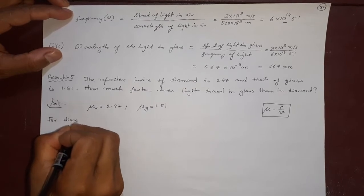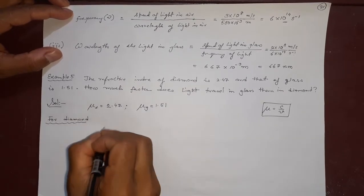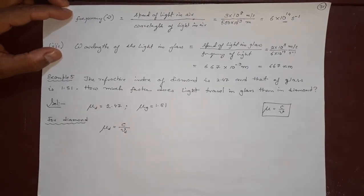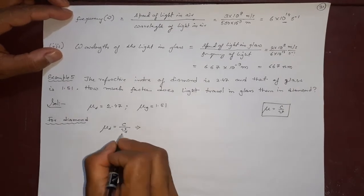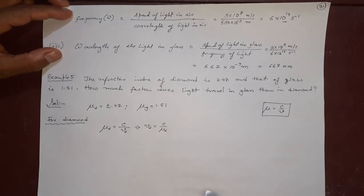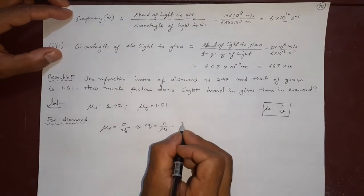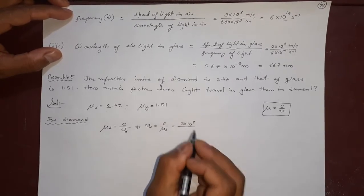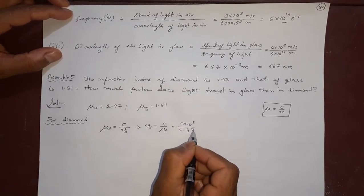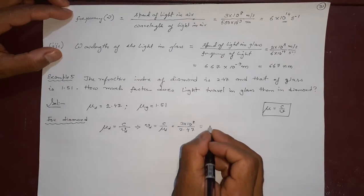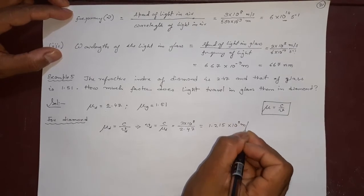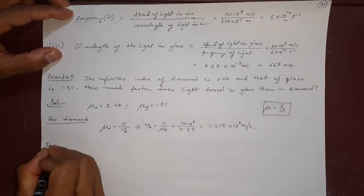For diamond: μ_d = c/v_d, so cross-multiplying gives v_d = c/μ_d. With c = 3×10⁸ m/s and μ_d = 2.47, we get v_d = 3×10⁸ / 2.47 = 1.215×10⁸ meter per second. That is the speed of light in diamond.